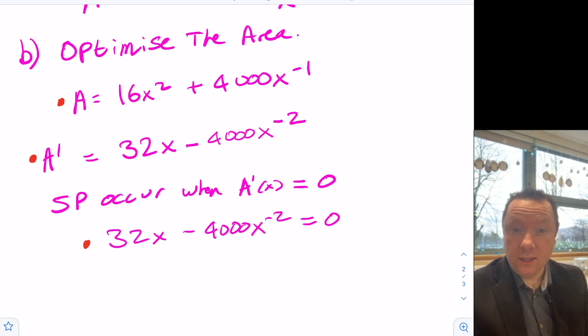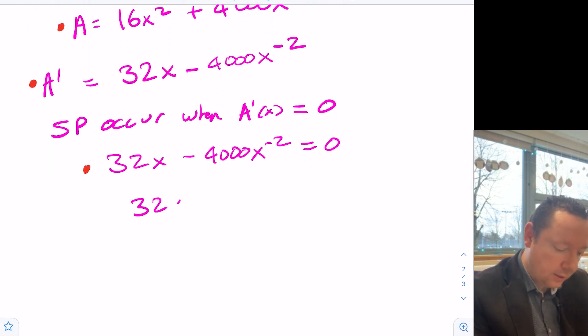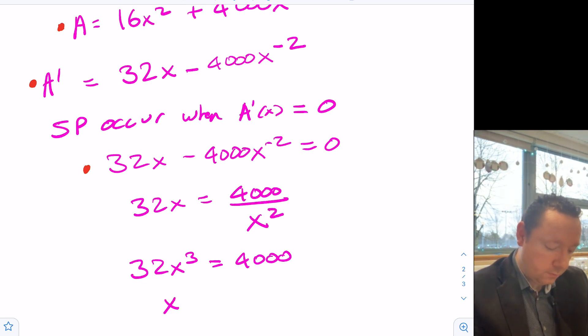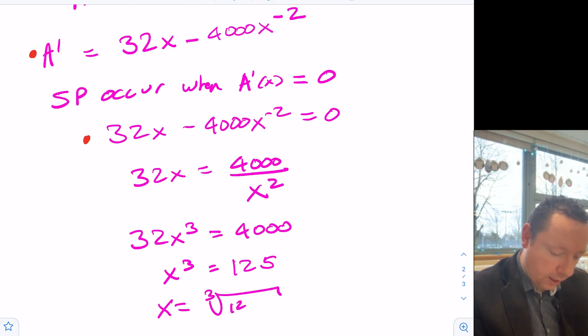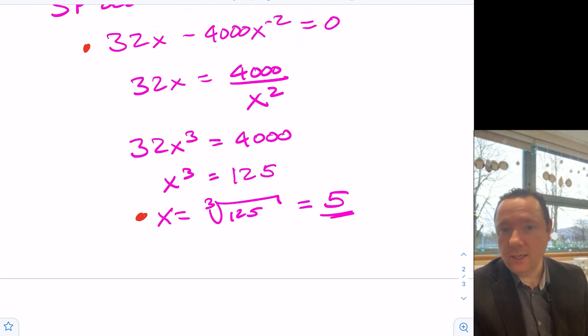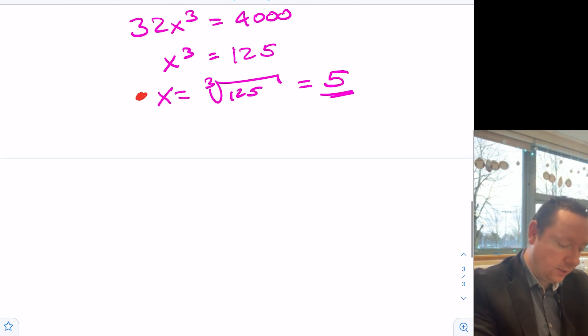And then we need to solve it. We'll get another mark in a moment for solving it. But I'll show you all the work that you need for solving it. So we've got 32x equals 4,000 over x squared. So multiplying through by x squared, we get 32x cubed equals 4,000. Dividing through by 32, 125. So x is the cube root of 125. There's only one answer to that. It is 5. So we now know that x is 5 as our turning point. But we need to prove and show that that is a minimum. We don't know if it's a minimum or a maximum.